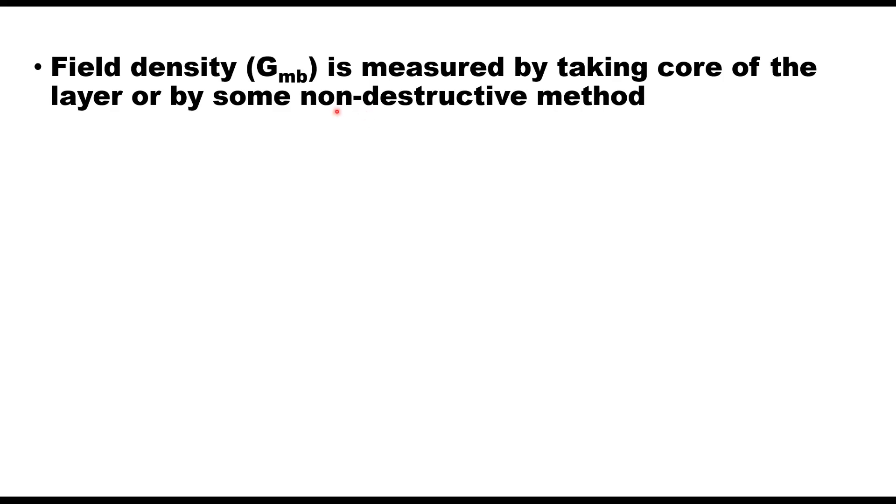Field density invariably should be measured by taking core of the layer. Some non-destructive methods like GPR or ultrasonic pulse velocity meter are also in use to estimate field density of an asphalt layer, but these equipments also require extensive calibration.